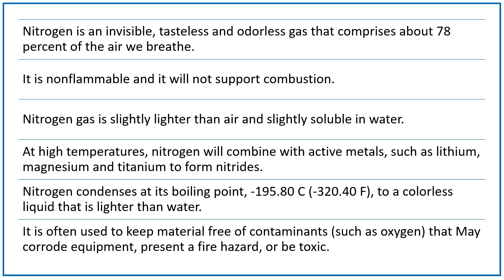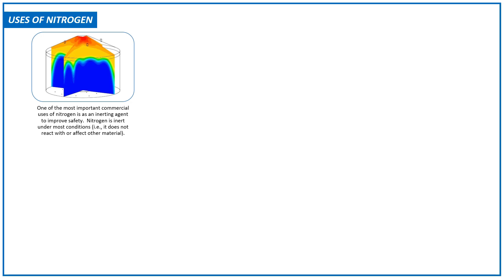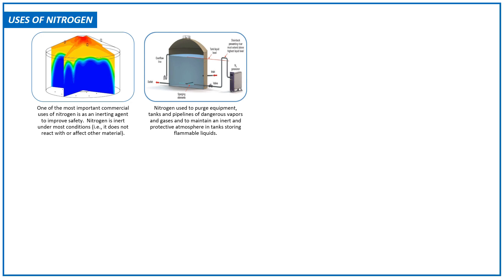What are the uses of nitrogen? One of the most important commercial uses of nitrogen is as an inerting agent to improve safety. Nitrogen is inert under most conditions — that is, it does not react with or affect other materials. Nitrogen is used to purge equipment, tanks, and pipelines of dangerous vapors and gases, and to maintain an inert and protective atmosphere in tanks storing flammable liquids.